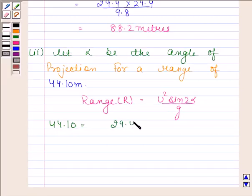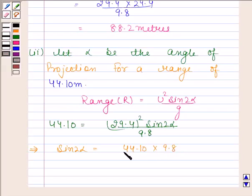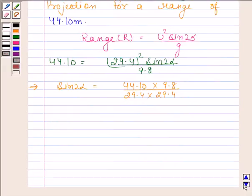This implies sine 2 alpha equals 44.10 times 9.8 divided by 29.4 times 29.4. On simplifying this, we get one-half.